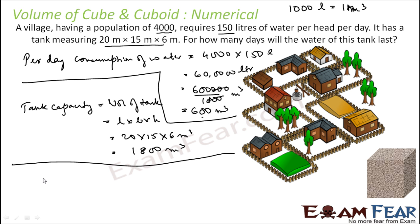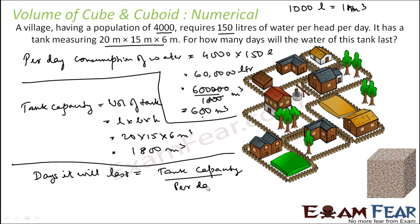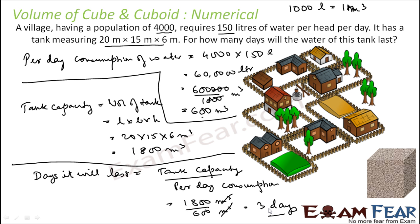How many days will it last? Days it will last is tank capacity divided by per day consumption — 1,800 by 600 meter cube — you get three days. For example, if you have two breads and you feed one bread per day, it lasts two days. Similarly, if you have 1,800 meter cube of water and need 600 meter cube per day, it will last three days. Same concept.